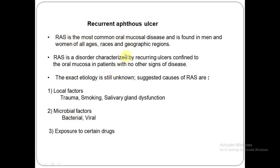So it doesn't actually have a particular gender predilection, because it can be equally seen in men as well as women. It's a disorder characterized by recurring ulcers confined to the oral mucosa in patients with no other signs of disease. This is why it's called recurrent apthous ulcer.